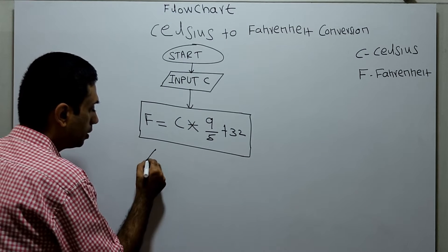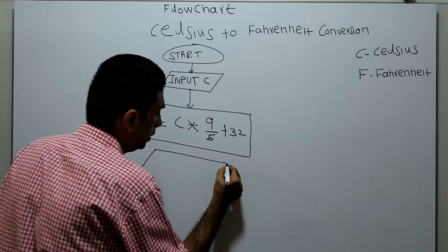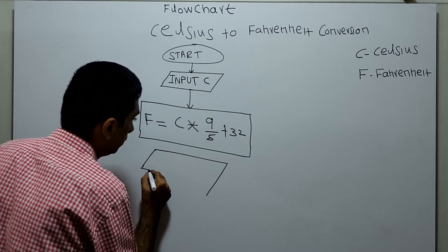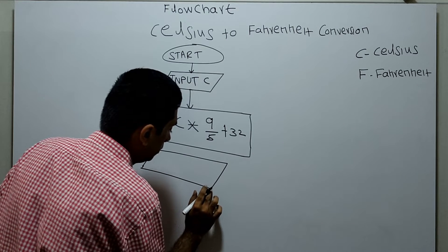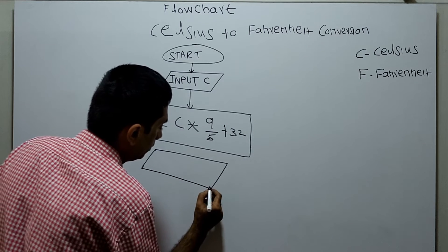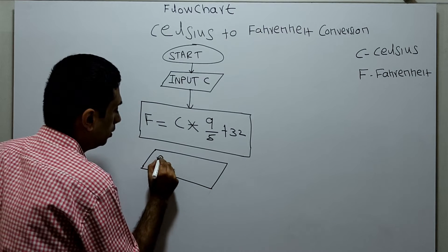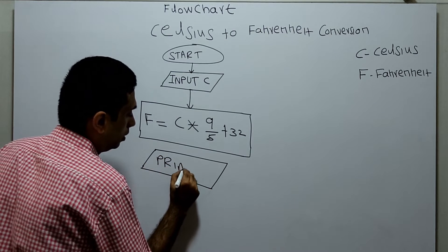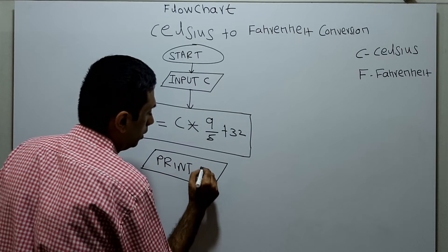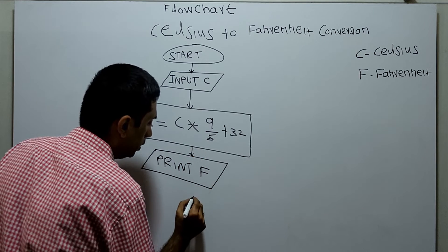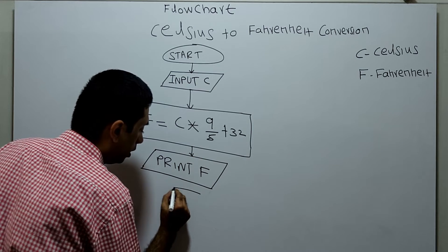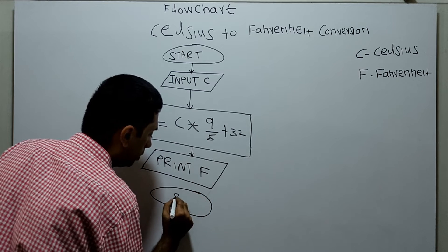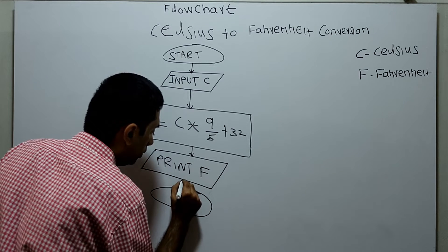Next I am printing. Then there is output in printing the Fahrenheit. Print F here. Then the logical stop of the flowchart.